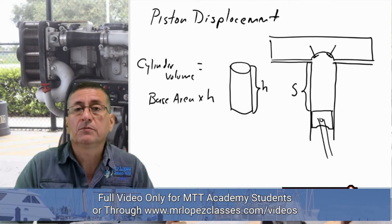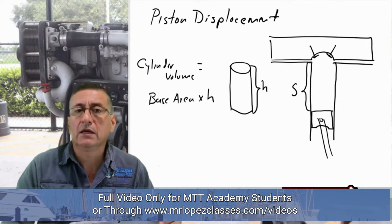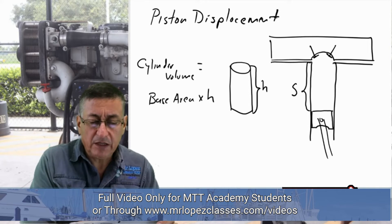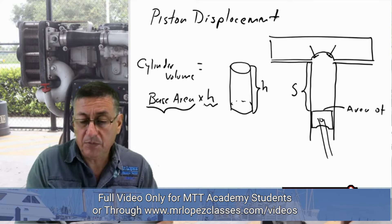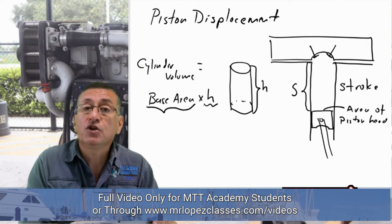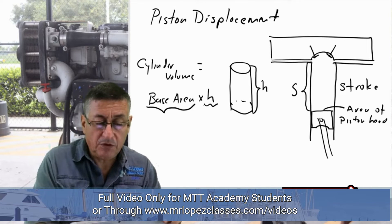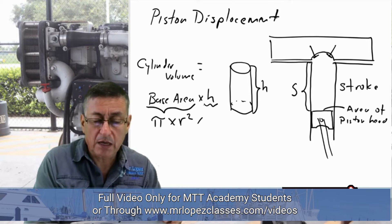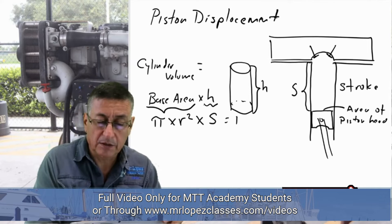In order to understand piston displacement, we are going to refresh our concept of geometry and how to calculate the volume of a cylinder. The volume of a cylinder is the base area times the height. In our particular case, the base area is the area of the piston head and the height is the stroke. The area of the piston head is pi times the radius squared, and the height is the stroke. This is piston displacement.